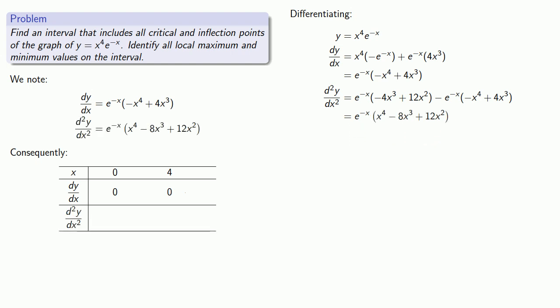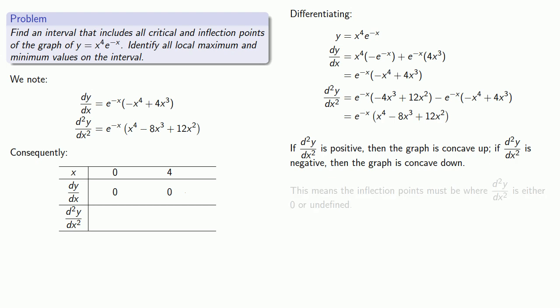Now we want to find the inflection points, and that's going to be where our concavity changes. But remember that if our second derivative is positive, the graph is concave up. If the second derivative is negative, the graph is concave down. What that means is that the inflection points must be where our second derivative is either zero or undefined.